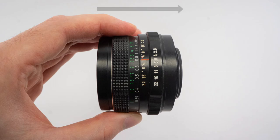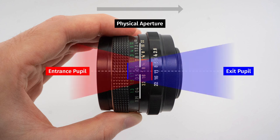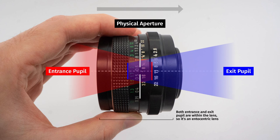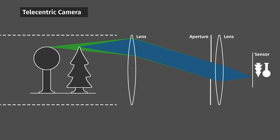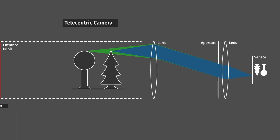Why? Every lens has something that's called the entrance pupil — that's the narrowest point through which light can pass, usually the aperture. What's slightly unintuitive is that the entrance pupil is not the physical aperture itself, but the size of the image of the aperture seen through the front of the lens. For the telecentric lens, this pupil is not located inside the lens, but infinitely far away and almost as large as the lens itself.